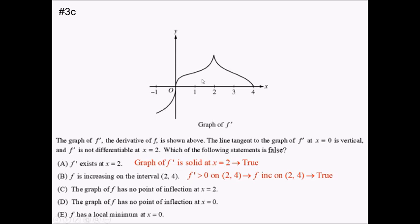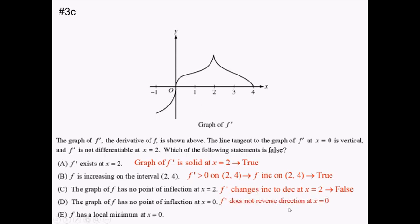Since f prime reverses direction at x equals two, we do in fact have a point of inflection there, making statement C — that there is no point of inflection — false. That's the one we're picking. Just to verify the others: statement D says the graph has no point of inflection at x equals zero. At x equals zero, f prime goes from increasing to increasing — no reversal — so this is true. Statement E says f has a local min at zero: f prime changes from negative to positive there, so f does have a local min, making this true. Choice C is confirmed.